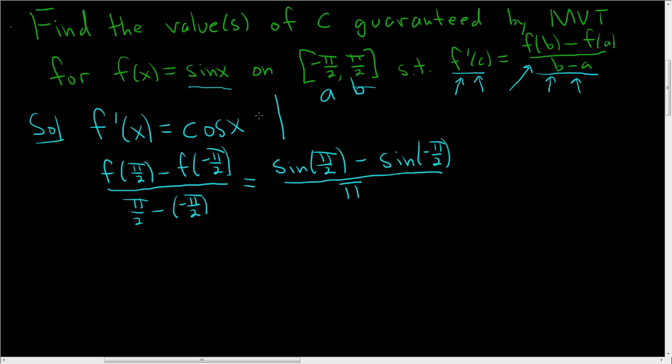Now sine of pi over 2, well, think about it. Let's see. Here's the unit circle. Sine is the y-coordinate. So at pi over 2, the y-coordinate is 1. And at negative pi over 2, the y-coordinate is negative 1. So it's minus negative 1 all over pi. There it is, 2 over pi.